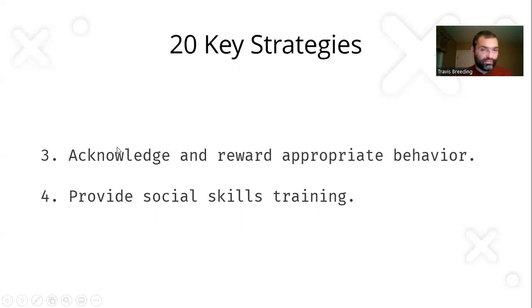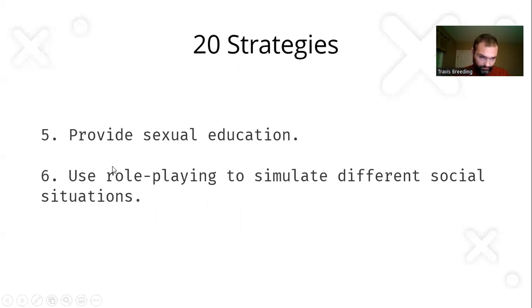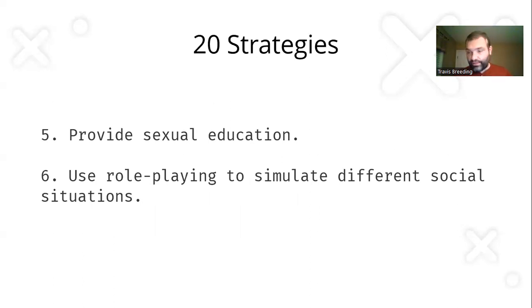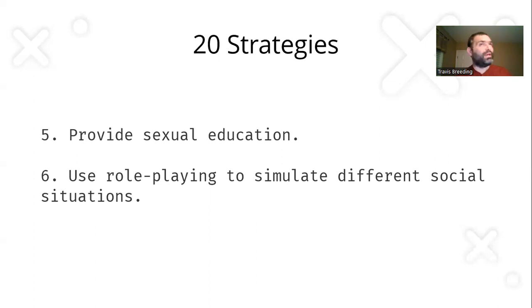Four: provide social skills training — teach those steps two through 785, because social skills are critical. Five: ensure learners learn each step of the process. Six: provide sexual education. It's a two-way street — we have to teach both social skills and sexuality education, because one without the other won't do enough good. Seven: use role playing to simulate different social situations in the natural environment and the right context.